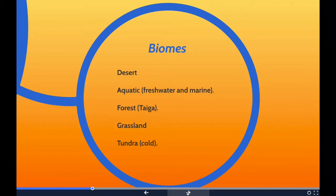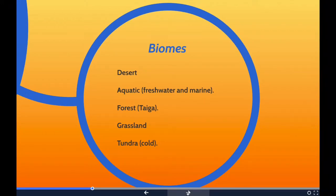For grassland biomes there are two main types: savannah grasslands and temperate grasslands. Finally, we have the tundra biomes — two major types: the arctic tundra and the alpine tundra. Tundra is by far the coldest of the five biomes, so from a weather standpoint, tundra means cold.